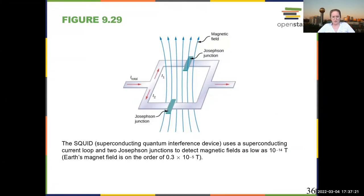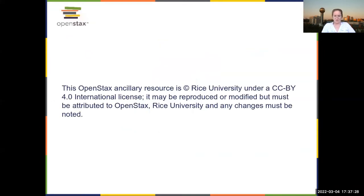which uses a superconducting loop from two Josephson junctions to detect magnetic fields. And that's it.